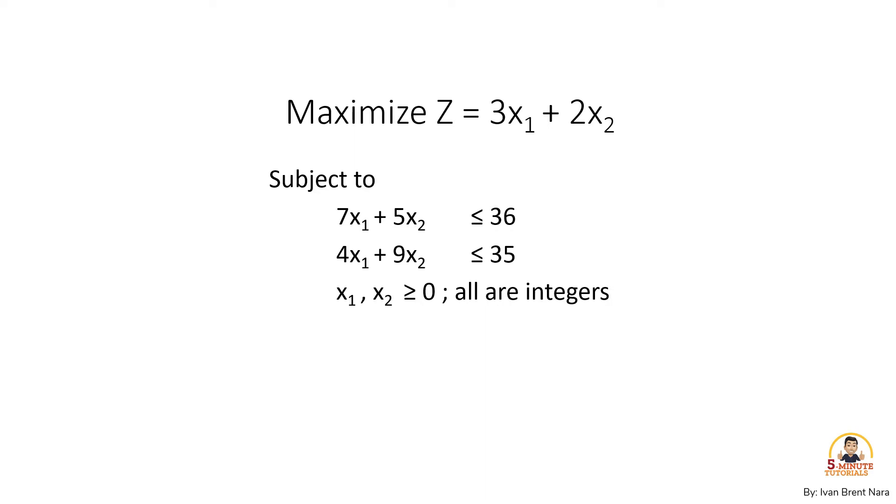First, 7x sub 1 plus 5x sub 2 less than or equal to 36. Second, 4x sub 1 plus 9x sub 2 less than or equal to 35. And all decision variables x sub 1 and x sub 2 are non-negative integers. This problem is an example of pure integer programming because all decision variables must be integer.